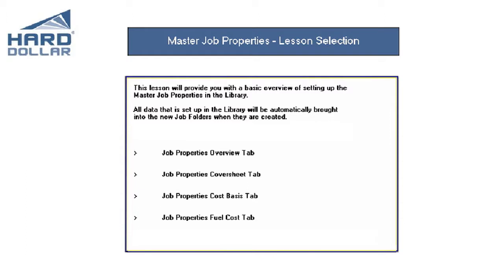This lesson will focus on only four of the tabs available in the Master Job Properties form: Overview, Cover Sheet, Cost Basis, and Fuel Cost. The other tabs within the form will be discussed in subsequent lessons. Please keep in mind that all the items discussed may not be utilized by your organization. If there is information that is common in most of your jobs, then it makes sense to set it up in the Master Job Properties so that it is copied into all new job folders automatically.